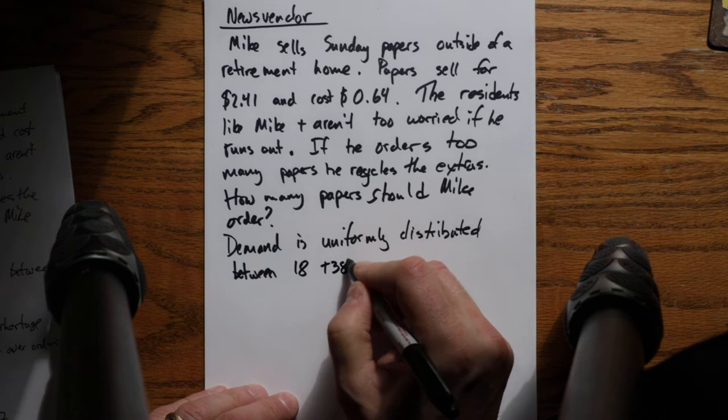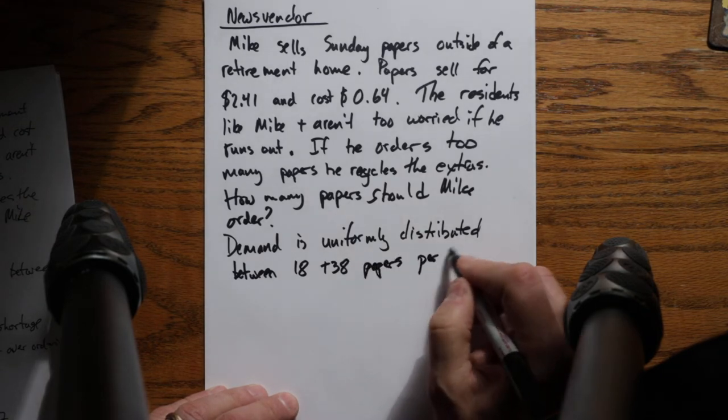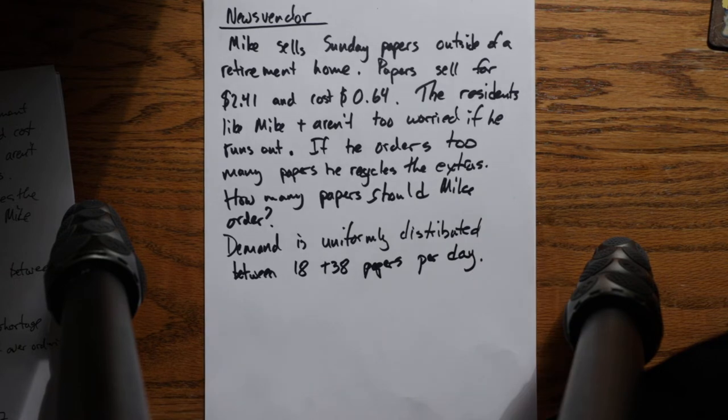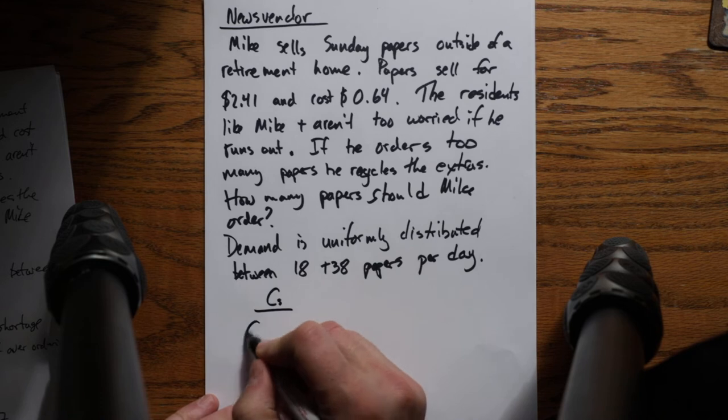So there's the question. You have a perishable item that you can't store. You can't sell one Sunday paper the next Sunday. If you order too many papers, you have to recycle them. If you don't order enough, you lose the opportunity to sell them. That's called the newsvendor problem. To solve the newsvendor problem, we have what's called the critical fractile.